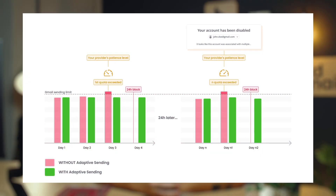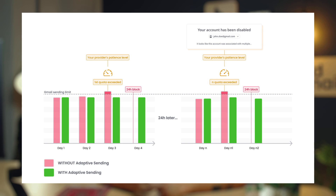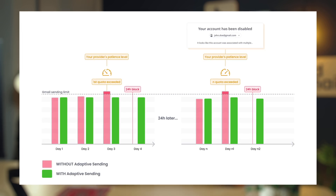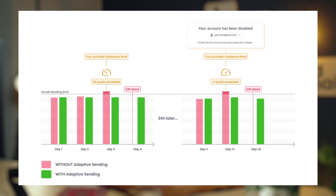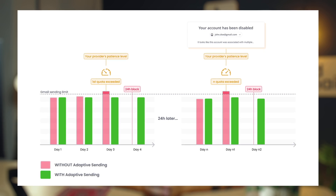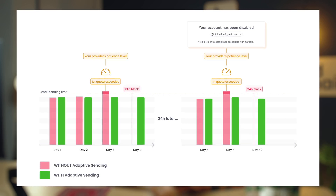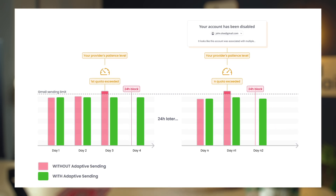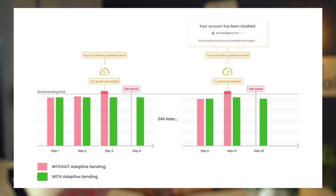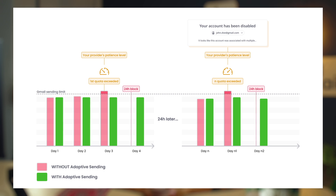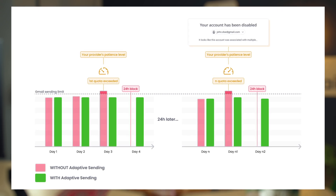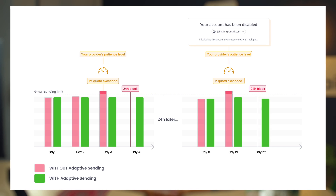Let's compare two possible sending journeys. The red path represents sending without adaptive sending, while the green path uses adaptive sending. With adaptive sending, your campaigns run smoothly as the system automatically adjusts to new limits, lowering the chances of any interruptions. In contrast, without adaptive sending, exceeding the limits results in 24-hour blocks on your inbox. If your sending tool doesn't actively manage this, these blocks can happen repeatedly, straining your provider's patience.